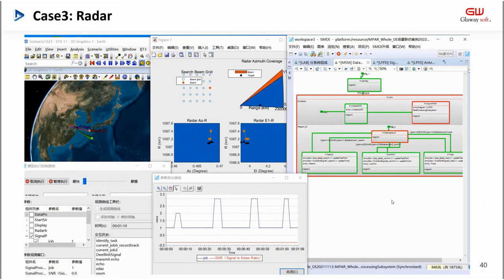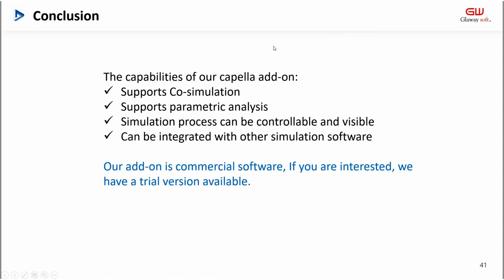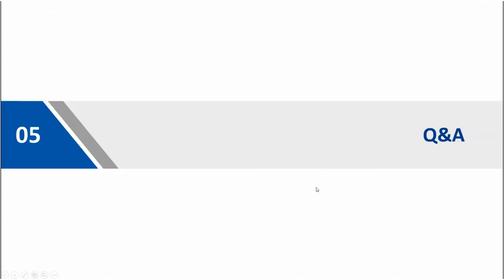This part is the conclusion part. At the beginning, I introduced the capabilities of our Capella add-on for simulation and parametric analysis. Then I gave three cases based on our add-on to solve user problems. If you are interested, please contact us at the end of the slide. I will provide our company email. What's more, our add-on is commercial software. If you are interested, we have a trial version available. Thanks everyone. That's all for this slide. Next is the Q&A session, and I will show you the email of our company.